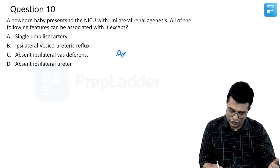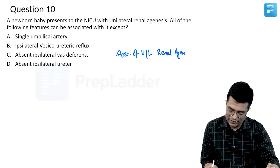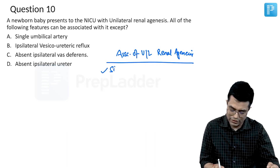Associations of unilateral renal agenesis: first of all, there is single umbilical artery.